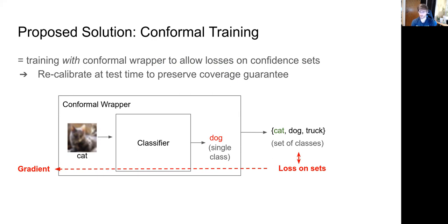This is what we address with conformal training — a procedure to train the conformal wrapper and classifier end-to-end. We define a loss on the confidence sets and backpropagate gradients through the conformal wrapper and classifier to update the classifier's parameters. Importantly, this is just a training procedure: after training we recalibrate again using any conformal predictor, preserving all coverage guarantees.